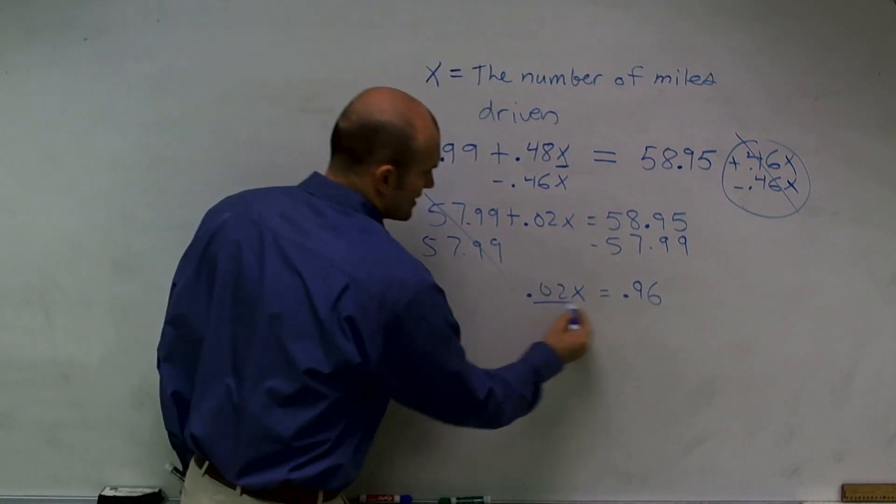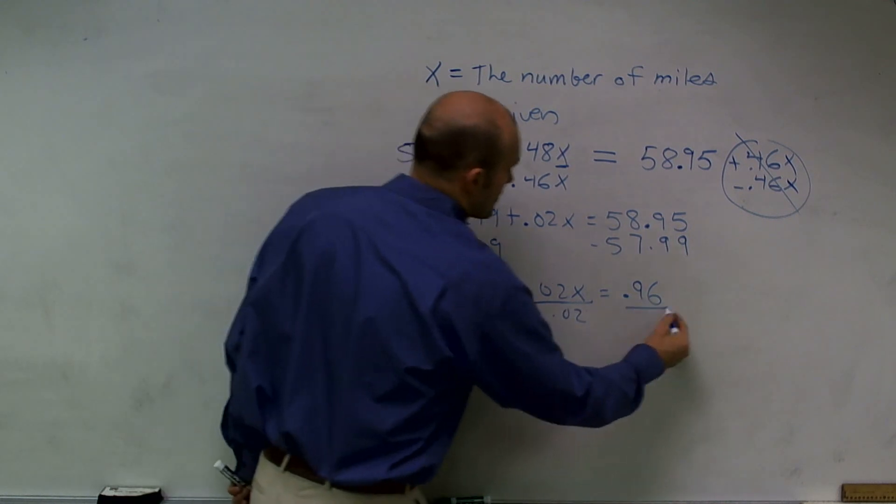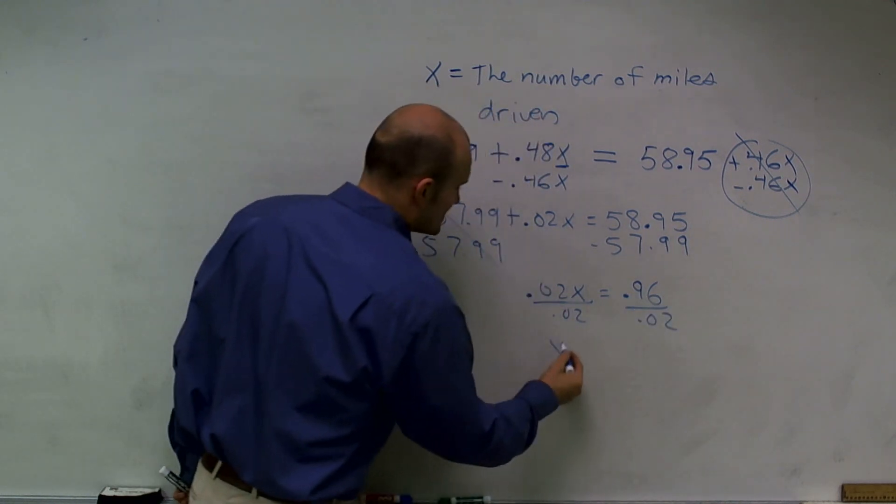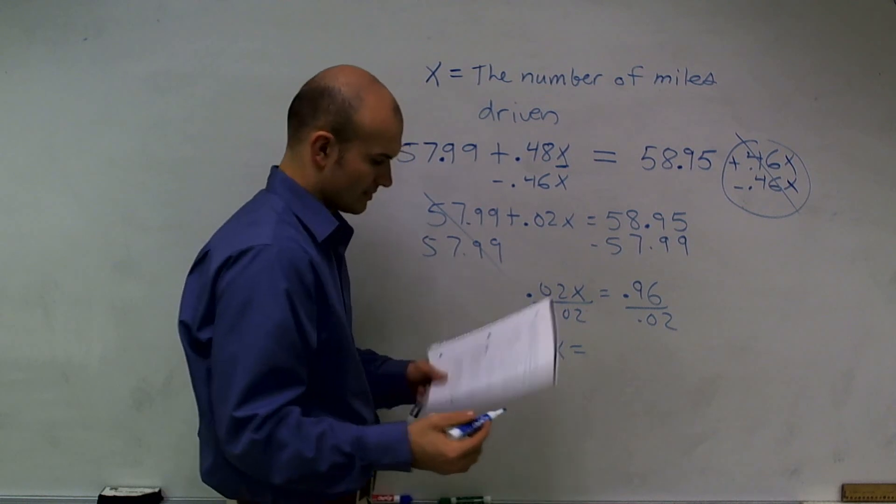Now, to solve for X, I divide by 0.02. And what I get is x equals 48.